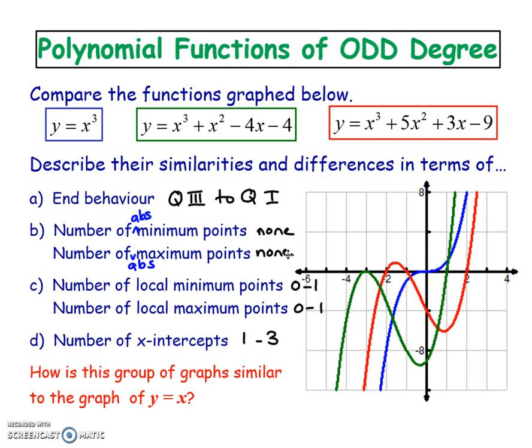In terms of local max and mins, this blue one doesn't have any peaks, so there is no local max or mins here. However, the red and the green both have one max and one min that are local. I put anywhere between zero to one local max and mins.